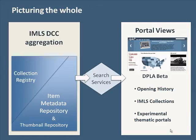Our aggregation can be thought of as having two major parts: a registry and a repository. Every collection we add gets a collection record in the registry. For those collections that also provide harvestable item metadata, item records are added to an integrated item metadata repository.